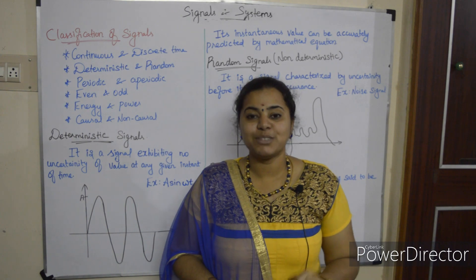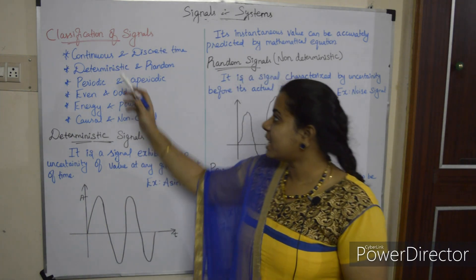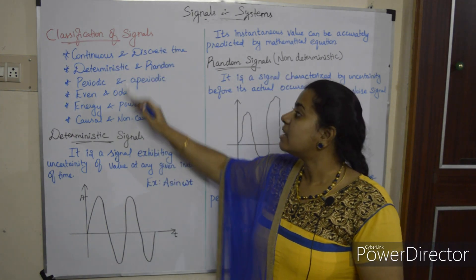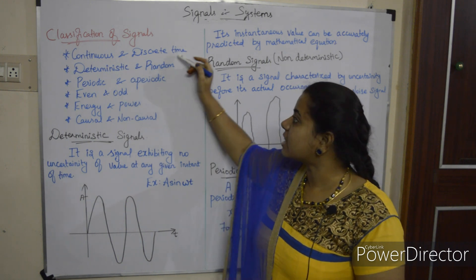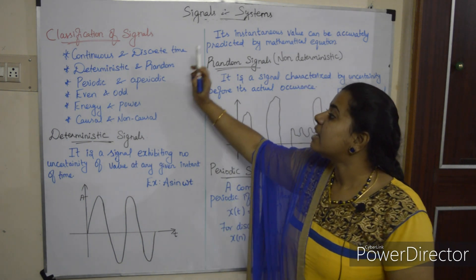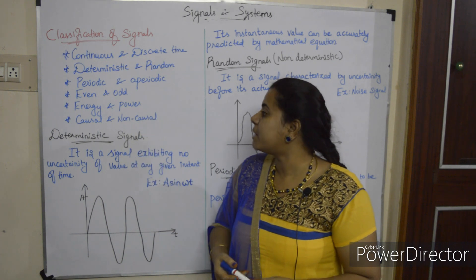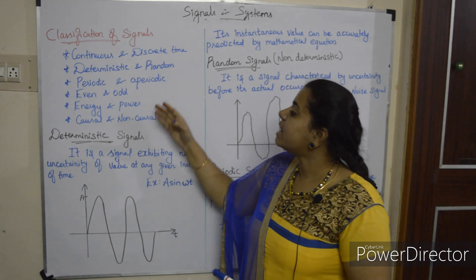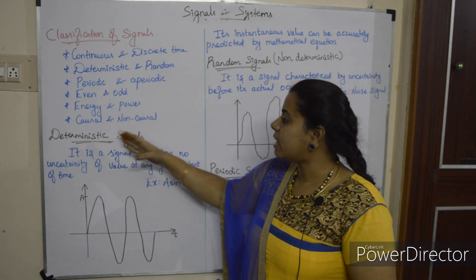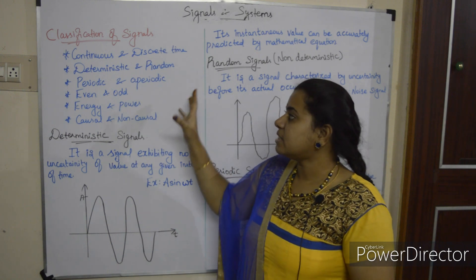Hi, my dear friends and students. Today our topic is Classifications of Signals. The first classification is continuous and discrete time signals. Then deterministic and random, periodic and aperiodic, even and odd, energy and power, causal and non-causal.